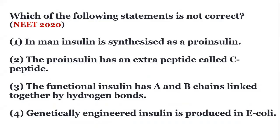The question is: which of the following statements is not correct? Option 1: In man, insulin is synthesized as a pro-insulin. Option 2: The pro-insulin has an extra peptide called C-peptide. Option 3: The functional insulin has A and B chains linked together by hydrogen bonds. Option 4: Genetically engineered insulin is produced in E. coli.